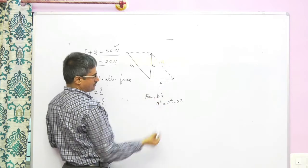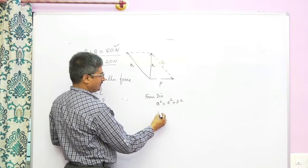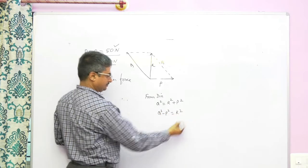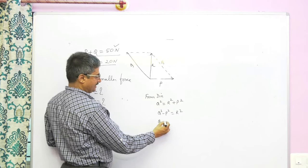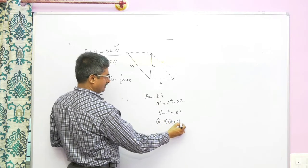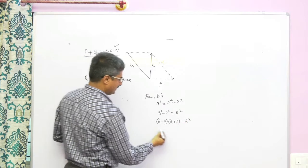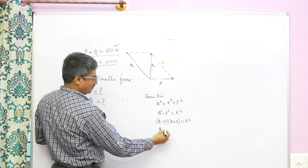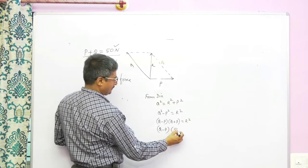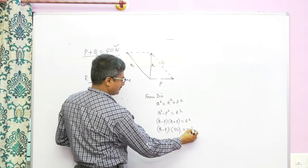Therefore, q square minus p square equals r square. Q minus p into q plus p equals r square. Q plus p is given 50, equals 20 square.